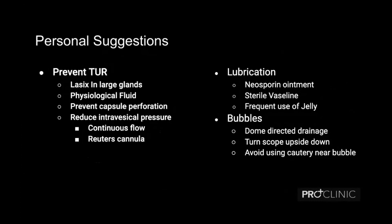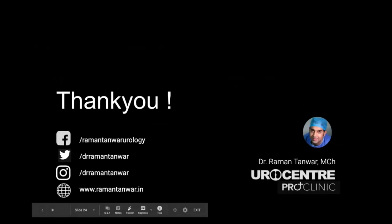To prevent TURP syndrome we can use Lasix and physiological fluids, and prevent capsular perforation by keeping pressures low using a Reuter's cannula or similar. Use adequate lubrication — you can use sterile Vaseline ointment because jelly tends to run off, or ask the assistant to keep applying jelly every two to three minutes. If there are bubbles, you can do dome direct drainage or turn the scope upside down so the bubble flies off to the dome. Always avoid using diathermy inadvertently. Thank you everyone for the patient listening.